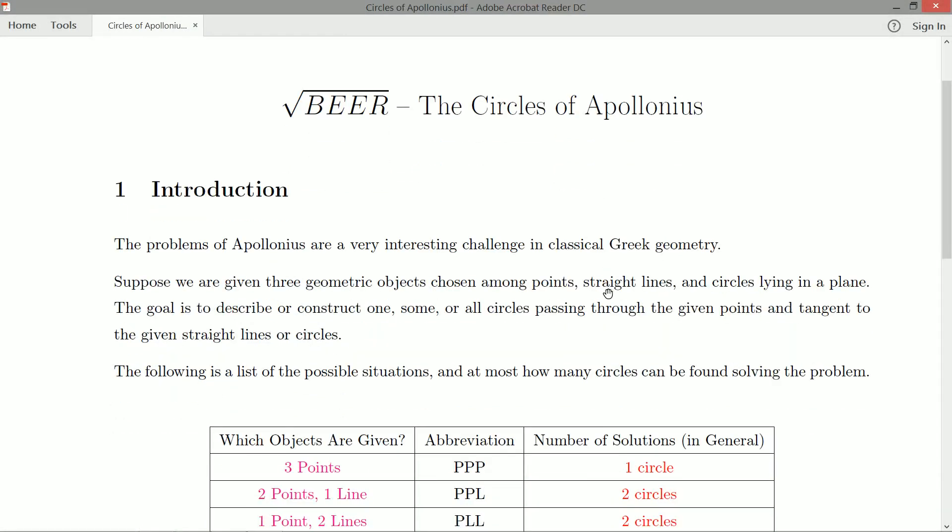And your task is to construct, and depending on what the problem's asking for, you'll either be constructing one, some, or all possible circles that pass through the points, assuming you're given any points, and are tangent to the circles and the lines that you were given. That's the challenge. Now, depending on what objects you're handed, lines, or circles, or points, you will have different constructions that you're going to make, and you're going to have different numbers of circles that you can find that pass through the points and are tangent to the lines and tangent to the circles.